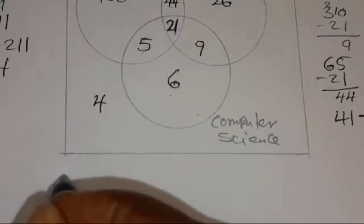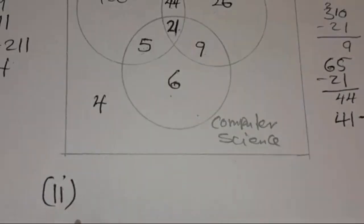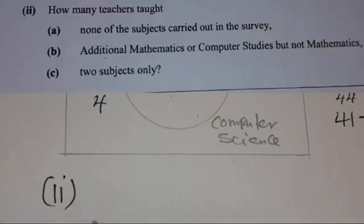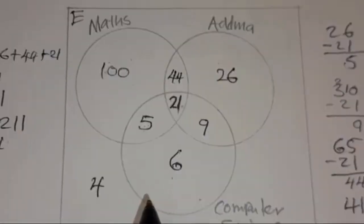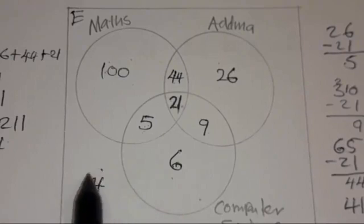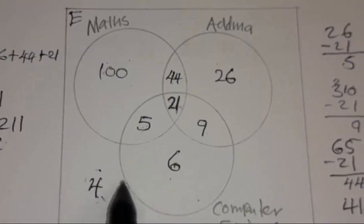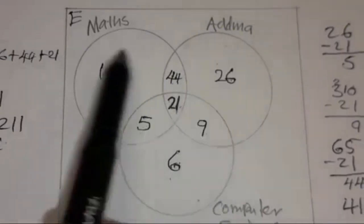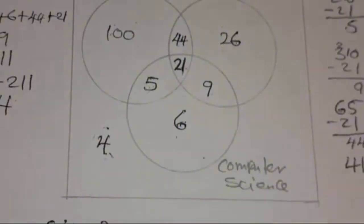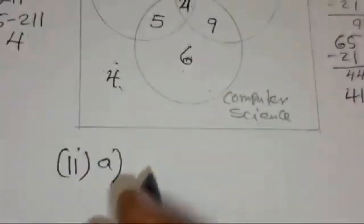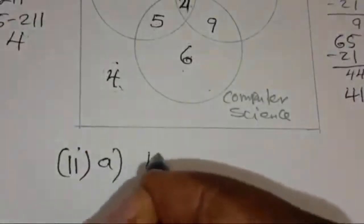The second part of this question says: how many teachers taught none of the subjects carried out in the survey? It's just these 4, because they are not in the Maths set, the ADMA set, or the Computer Science set. So the answer is 4 teachers.